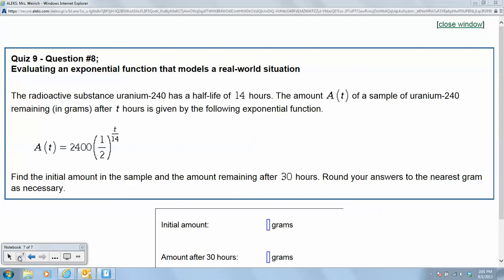The amount A(t) of a sample of uranium-240 remaining after t hours is given by the following exponential function: A(t) equals 2400 times the quantity one-half to the t divided by 14th power.